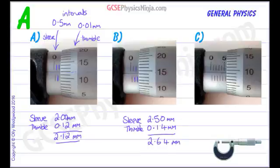Finally, let's take a look at this one. This is a larger object. We've got 5 millimeters showing. In fact, 5 and a half is just showing just there. So we've got the sleeve which shows us 5.50 millimeters, 5 and a half.